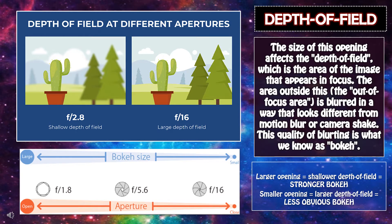Depth of field. The size of this opening affects the depth of field, which is the area of the image that appears in focus. The area outside this — the out-of-focus area — is blurred in a way that looks different from motion blur or camera shake. This quality of blurring is what we know as bokeh. Larger opening equals shallower depth of field equals stronger bokeh, while smaller opening equals larger depth of field equals less obvious bokeh.